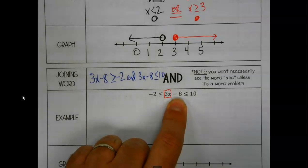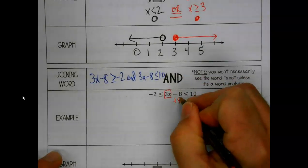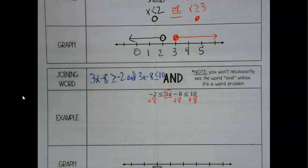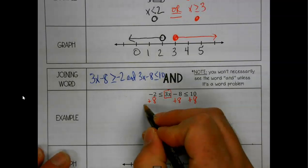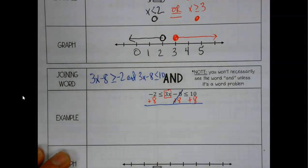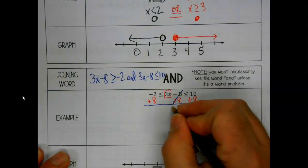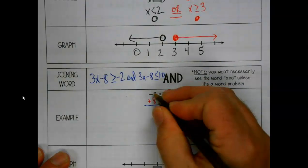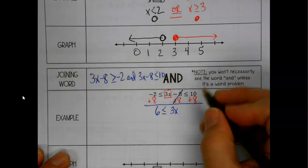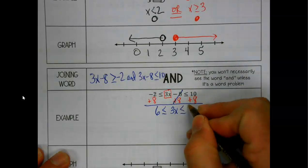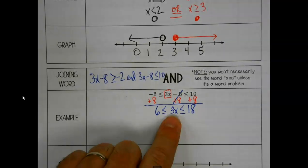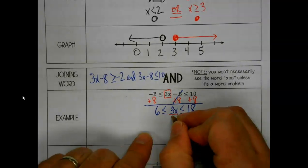Whatever is being done to x, we have to do it to all three parts of the inequality when it's set up this way. We've got our 3x in the middle — negative 2 plus 8 is 6, and 10 plus 8 is 18. One more step to get x by itself.